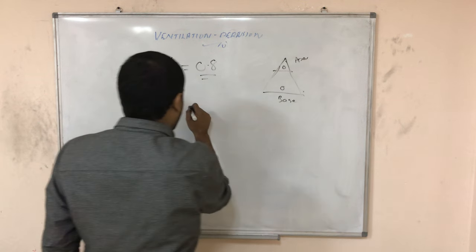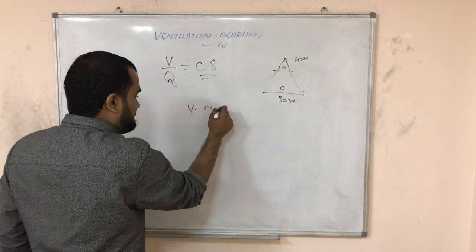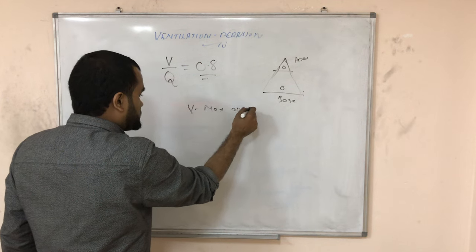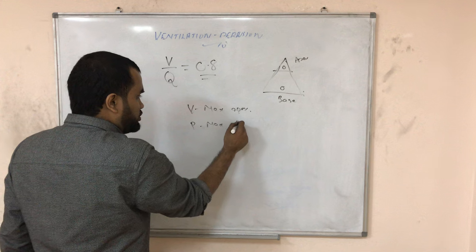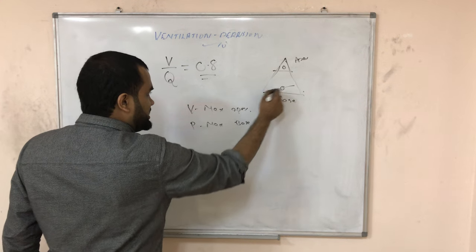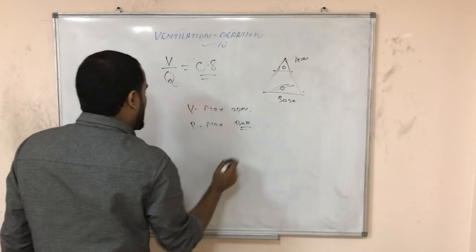Ventilation is maximum at apex. V is maximum at apex. Perfusion is maximum at base. Now the blood vessels are more in the base region, so this will be maximum there.